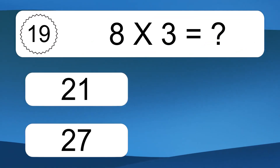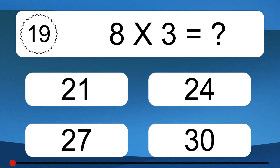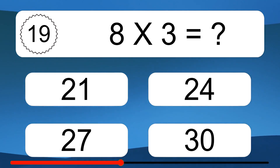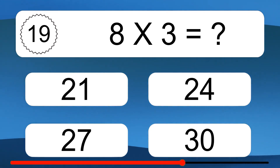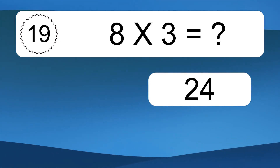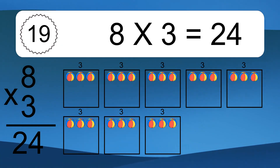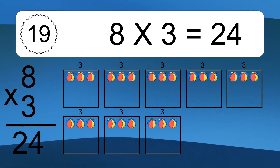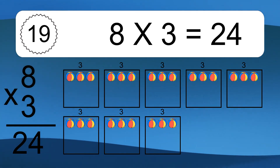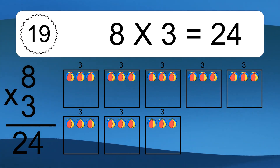8 times 3 equals what? 8 times 3 equals 24. We have 8 boxes, and each box has 3 colorful balls inside. If you count all the balls in all the boxes together, you will have 8 times 3 balls. This equals 24 balls.